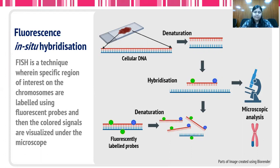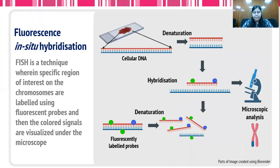When these are hybridized, they are observed under the microscope. Specific changes — like any deletion, duplication, or changes in the localization of specific chromosome arms — can be detected using FISH.